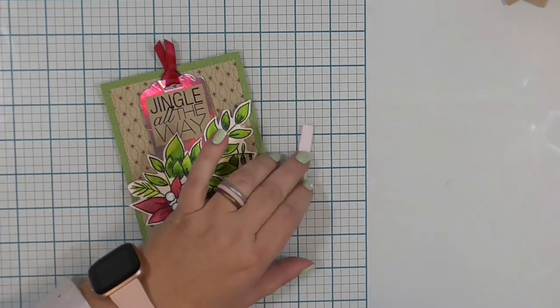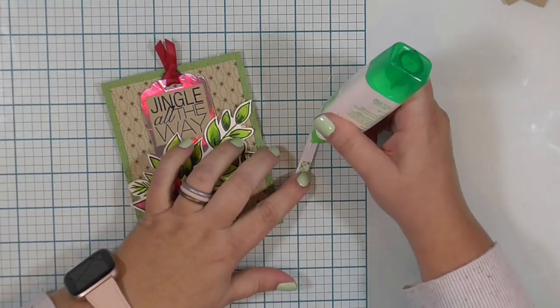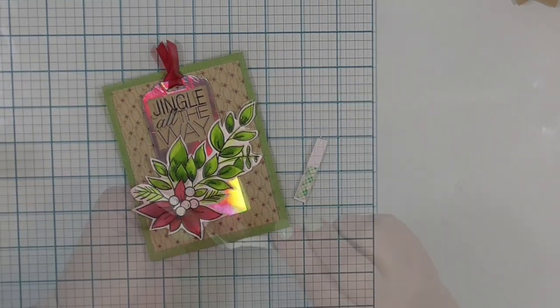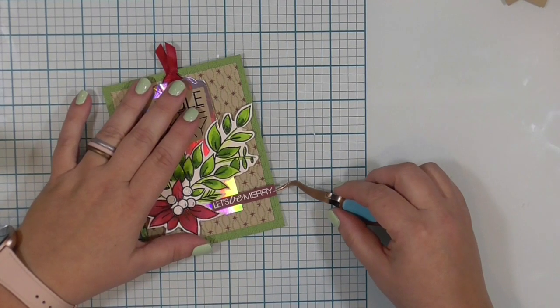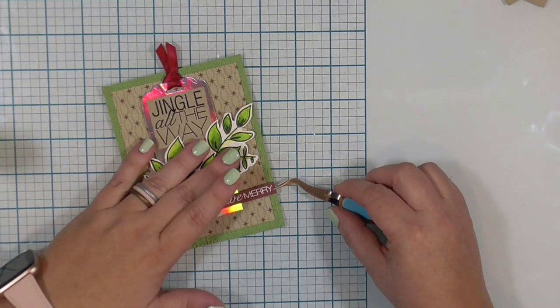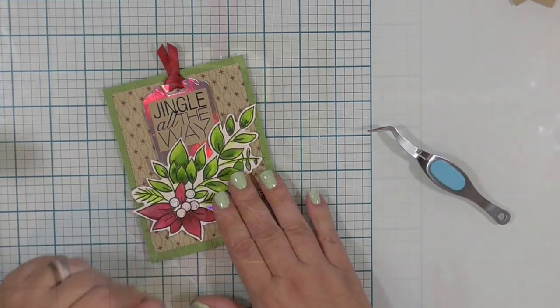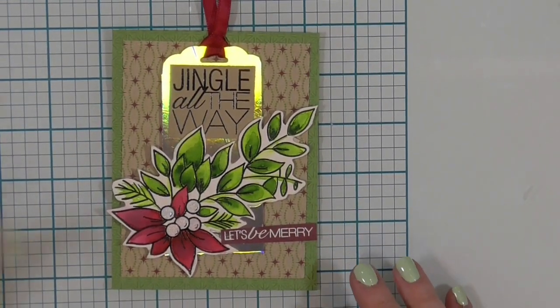I am putting some 3M foam tape on the part of the sentiment that will hang off of that tag and then liquid glue on the part that will be on the tag and I'm just kind of butting that up to where the foam tape hits the edge of the tag.